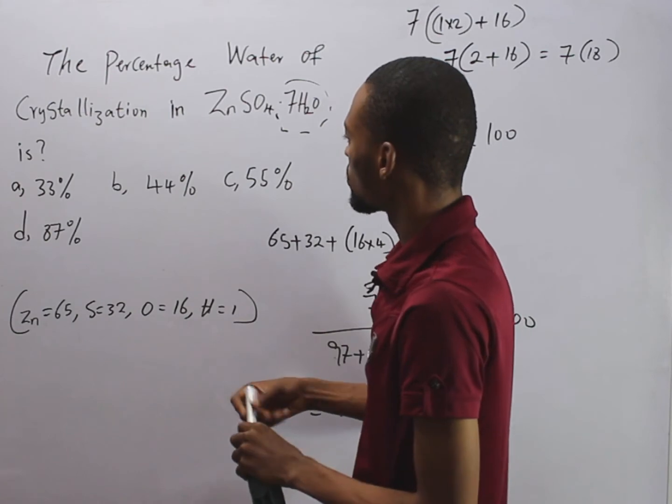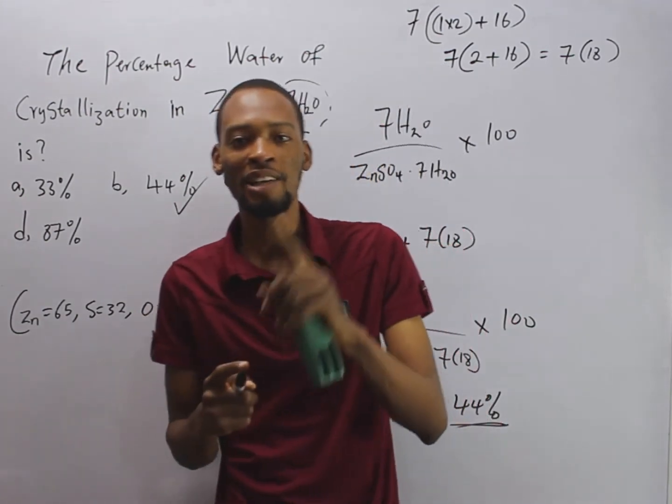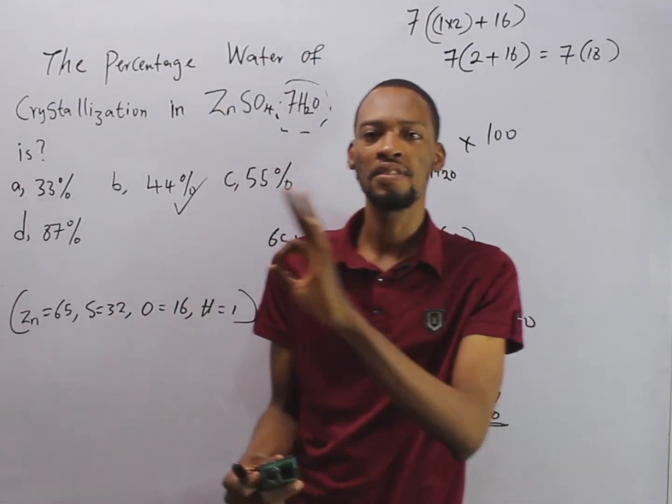And that is option B, which is 44%. This is how you calculate percentage water of crystallization.